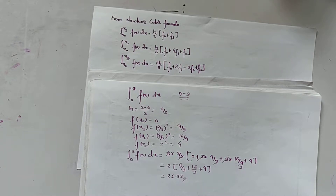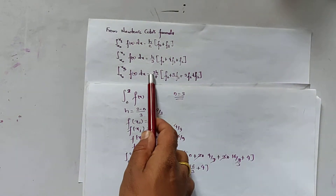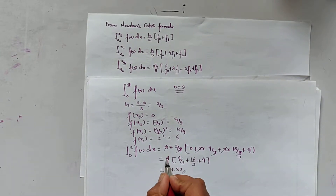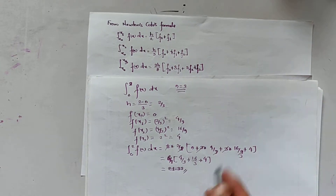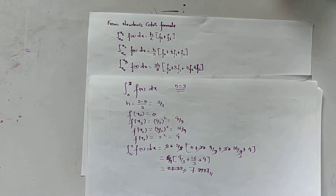Namaste. In this video, we are going to derive the equation for the trapezoidal rule. First, let us correct the previous mistake from the previous video. I had written 2 by 3, but in the formula it should be by 8. So this is the mistake — please correct it. It is 6 by 8, and the answer becomes 7.9987. Please correct that in the previous video.